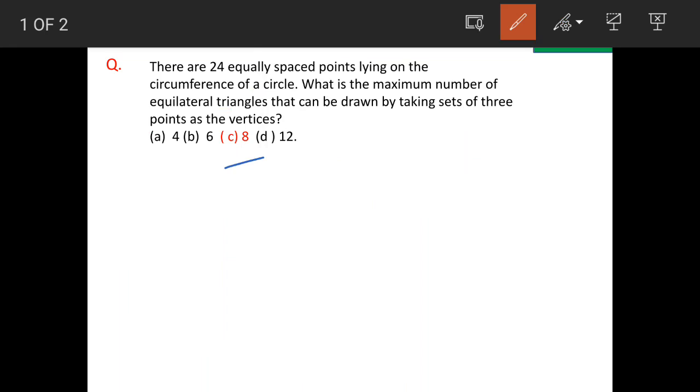Before we proceed, we will see the shortcut method. We have total 24 points, and each triangle will have 3 points. So how many triangles are possible? 8. This is the shortcut way of solving the question. Now we will see the solution proper.